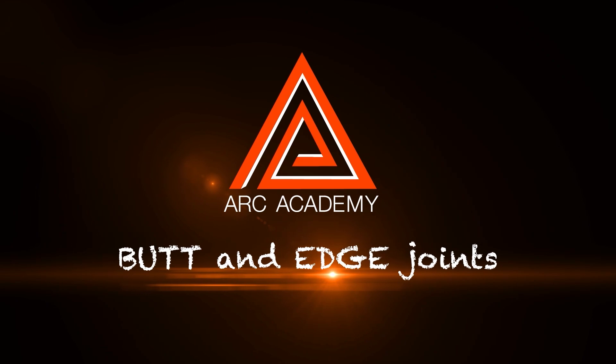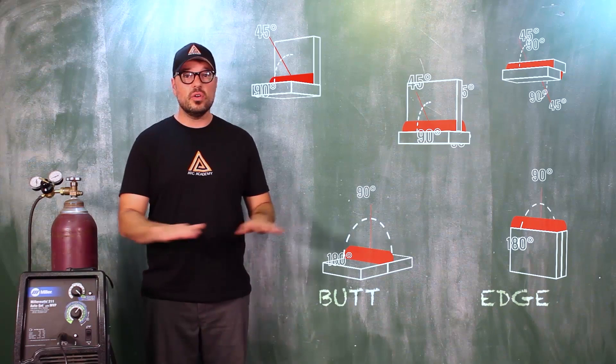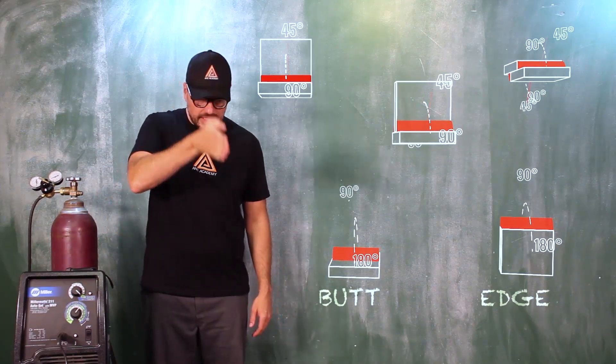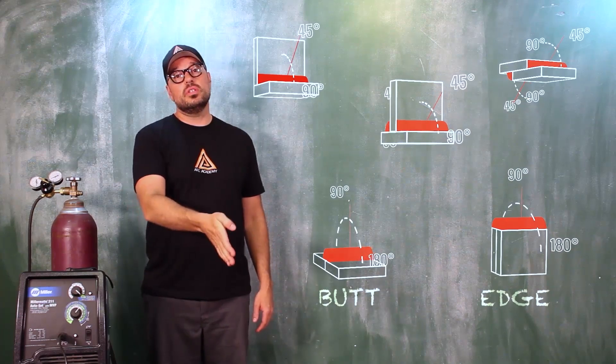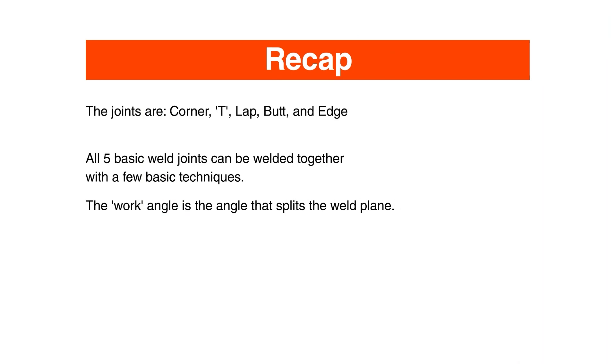Now let's talk about the butt joint and the edge joint. Same deal - anytime you have any angle of weld, such as 180 degrees, you're gonna go in splitting it in half at 90 degrees to create your weld. You're keeping your work angle consistent.